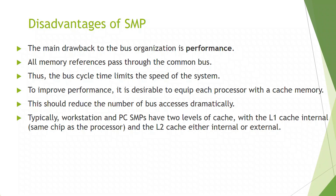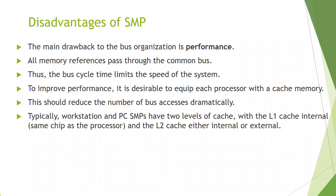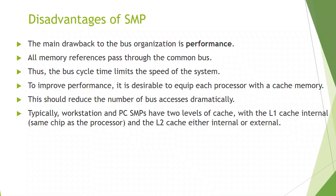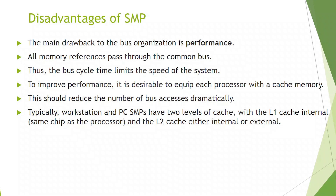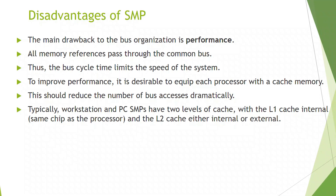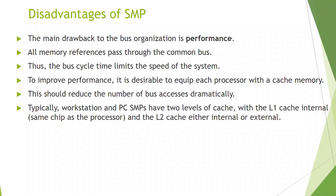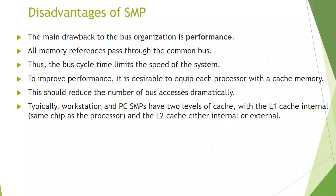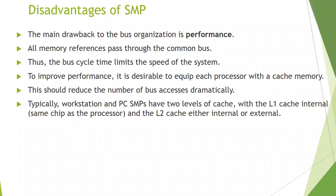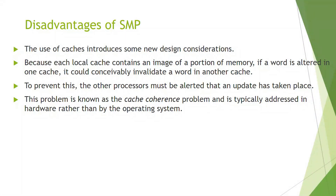The disadvantages of SMP: the main drawback of the bus organization is all memory references pass through the common bus. Thus, the bus cycle time limits the speed of the system. To improve performance, each processor needs to have a cache memory so that it can reduce the number of bus accesses dramatically. SMP has two levels of cache: level one cache internal, and level two cache, either internal or external. The use of caches introduces some new design considerations. The problem is known as the cache coherence problem and is typically addressed in hardware rather than the operating system.